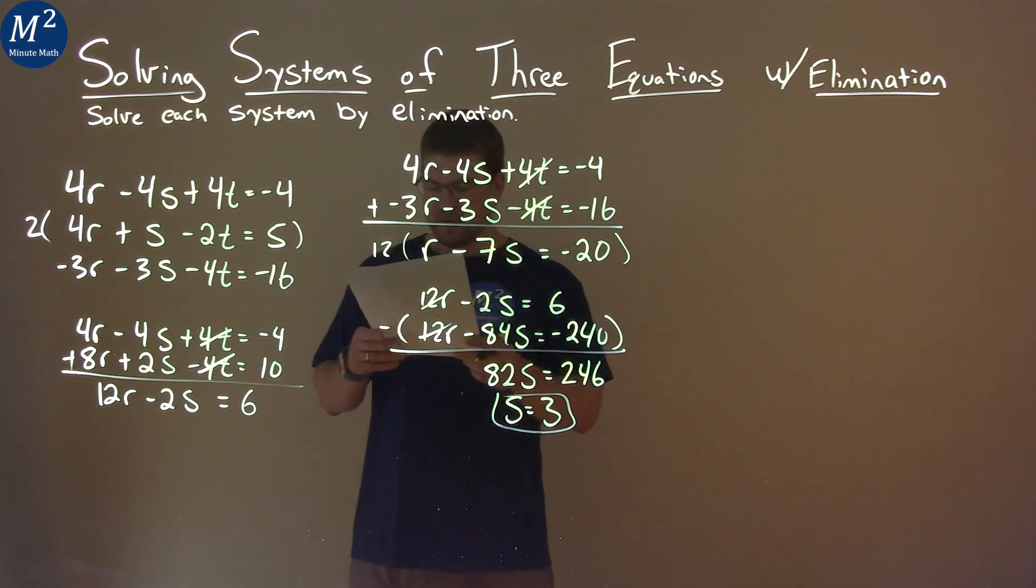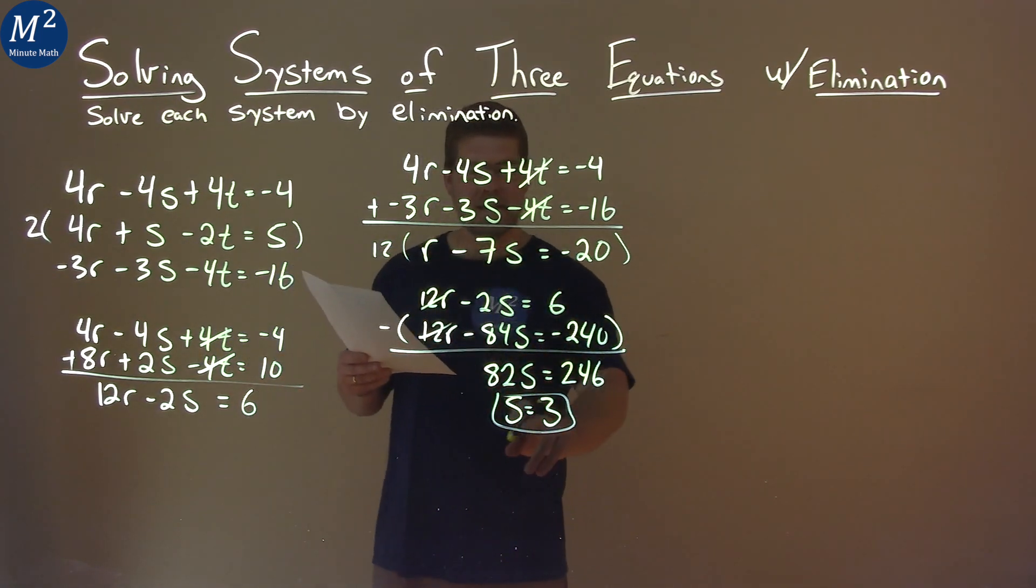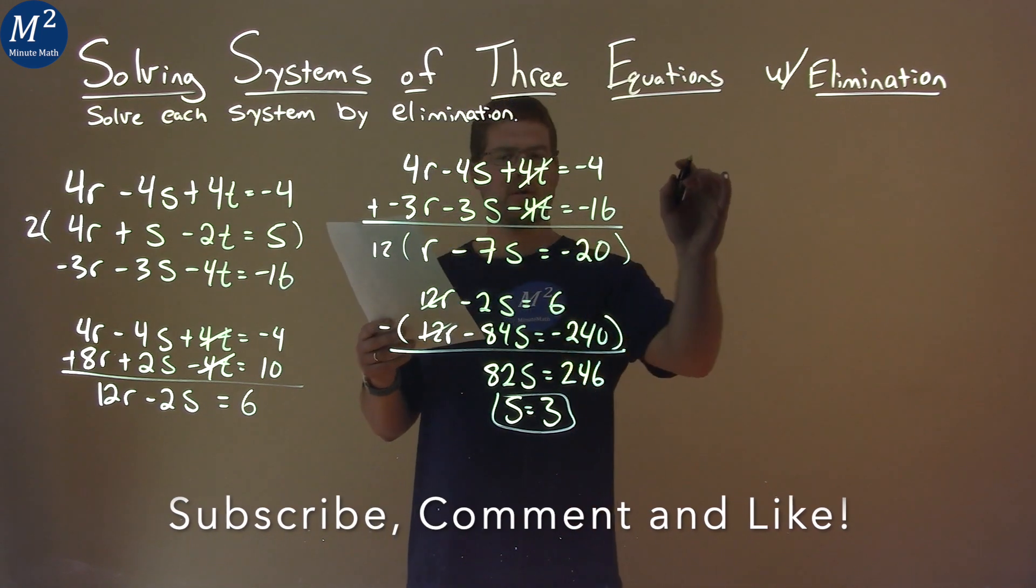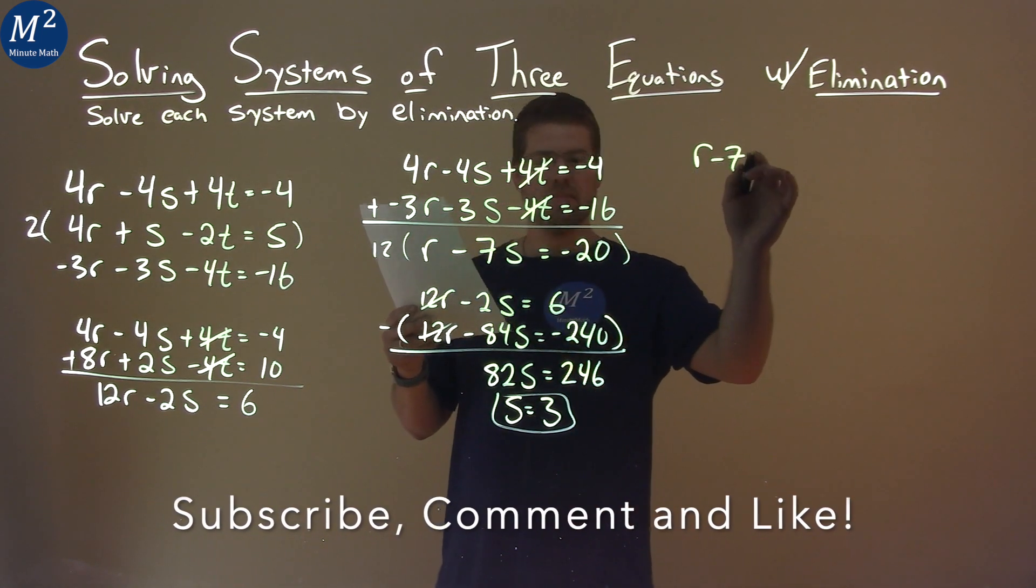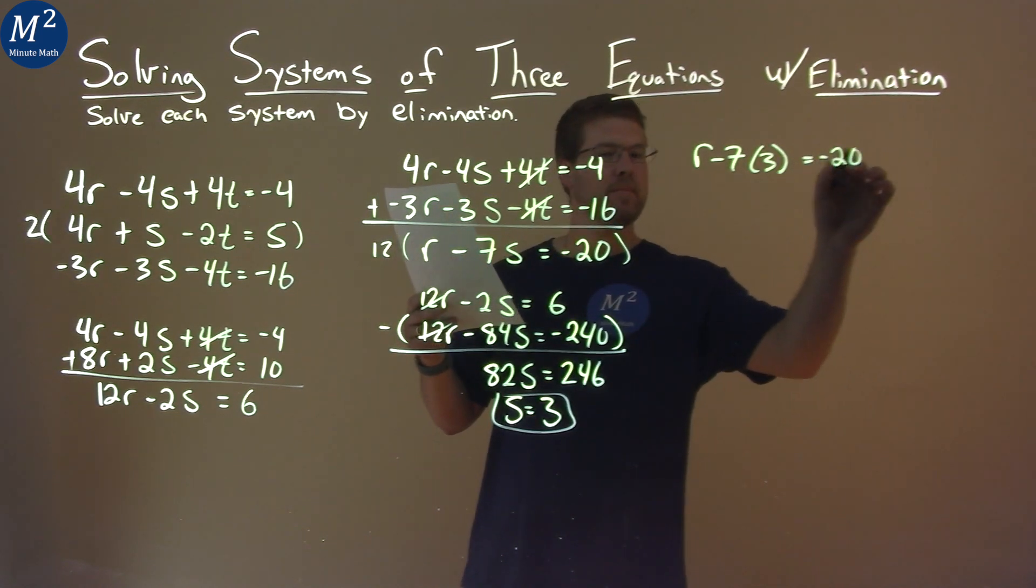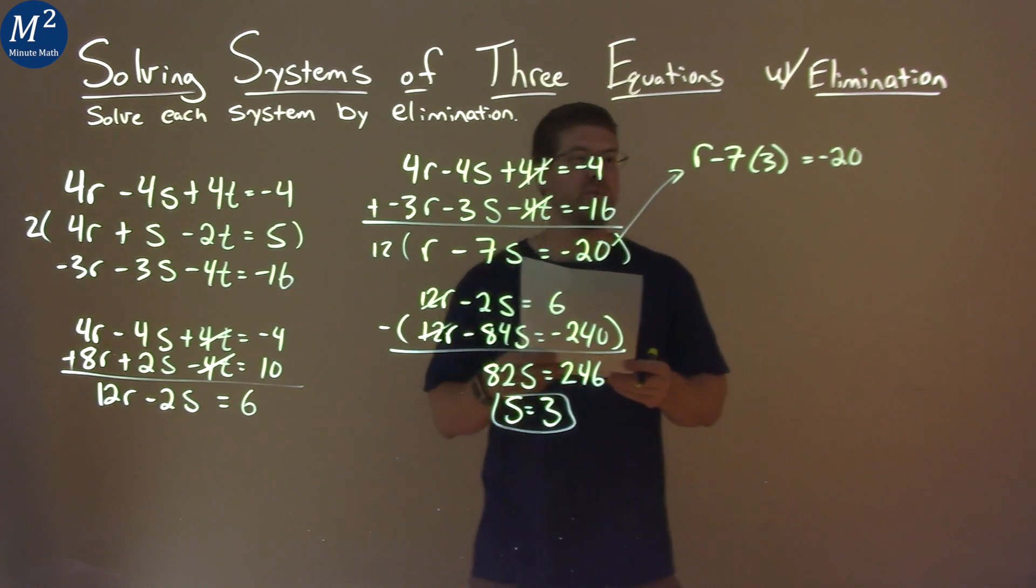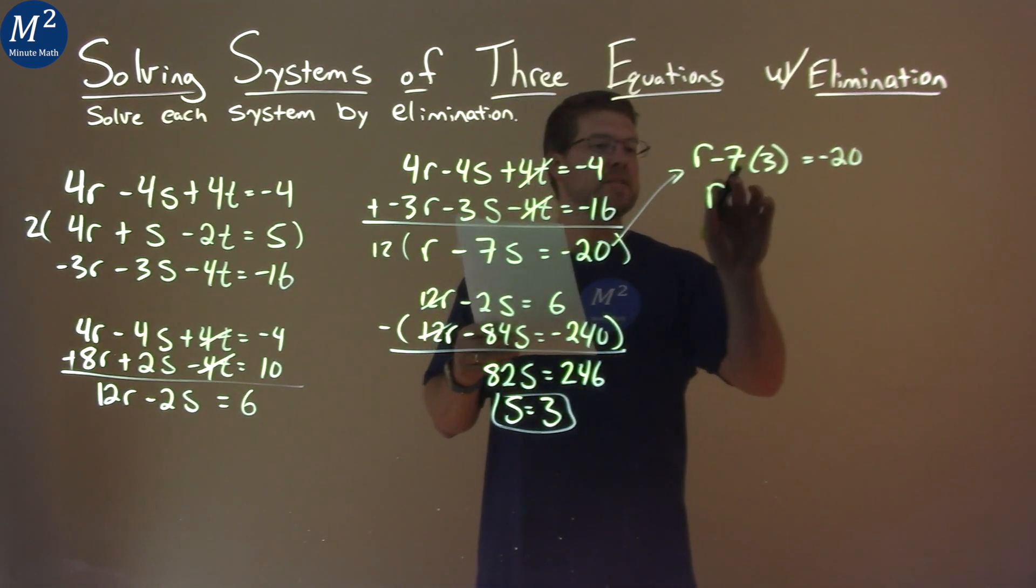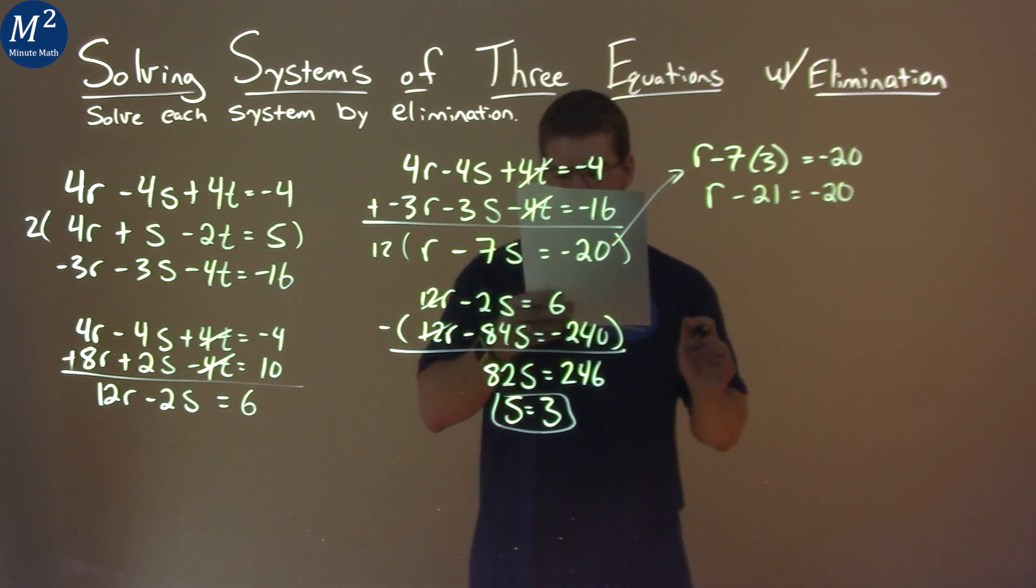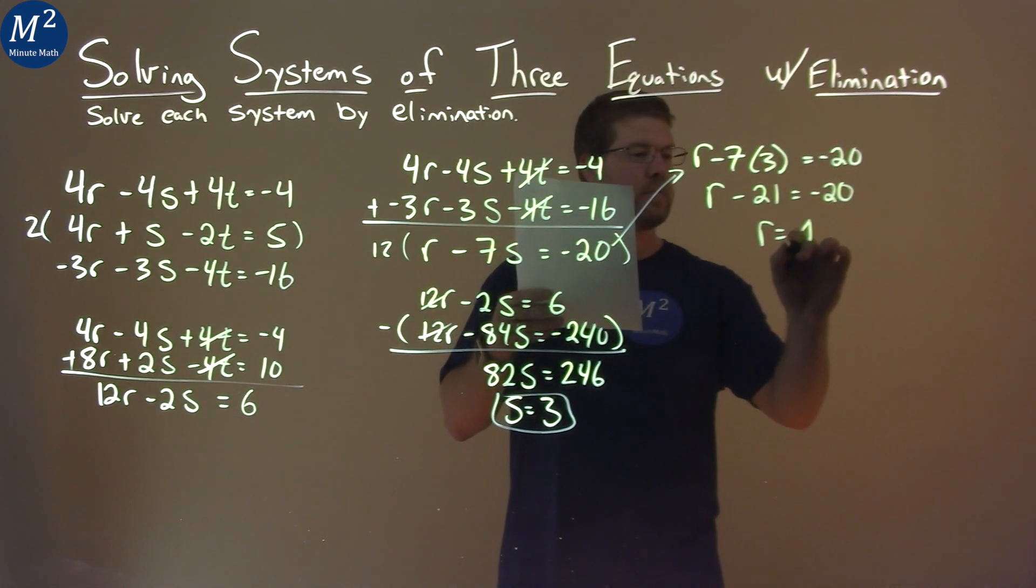All right, well, what about the next variables? Where can we go from there? Well, we can take that s value, and we have this equation right here. r minus 7, and instead of s, we have 3, and that equals negative 20. So that's this right here. And now we can use that to solve for r. 7 times 3 is 21, equals negative 20. Add 21 to both sides, and r equals positive 1.